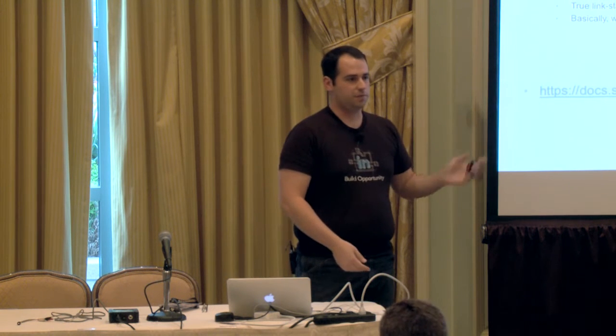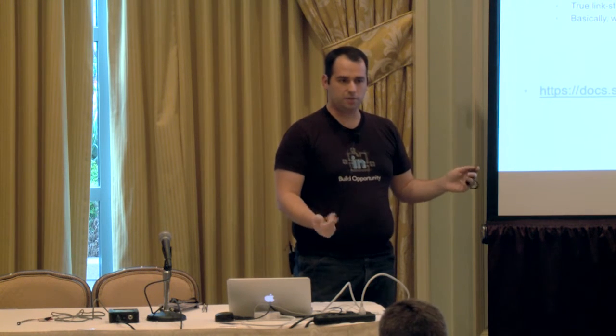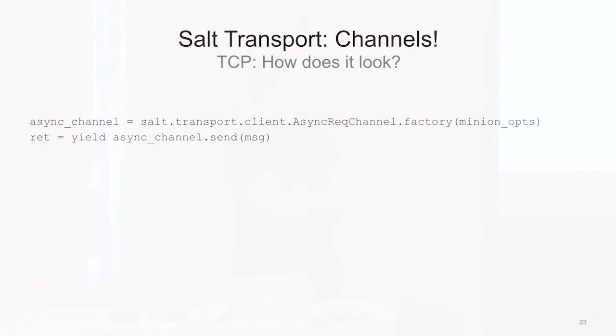There's documentation on the TCP stuff. Basically: connect, throw some bytes on the wire, and stuff is great. The interface is simple — create a channel, send a thing on the channel, get a thing back. You can pass in timeouts and retries and all that, which is the same interface we had before. As far as the user is concerned, nothing's really changed — it's just better under the hood.